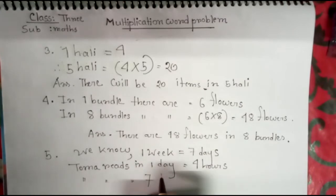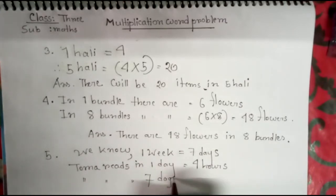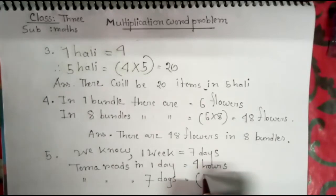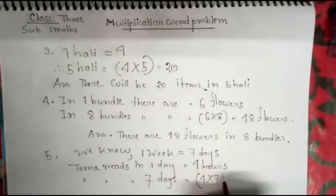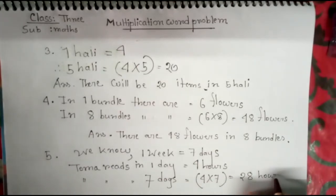Four times seven is equal to twenty-eight hours.